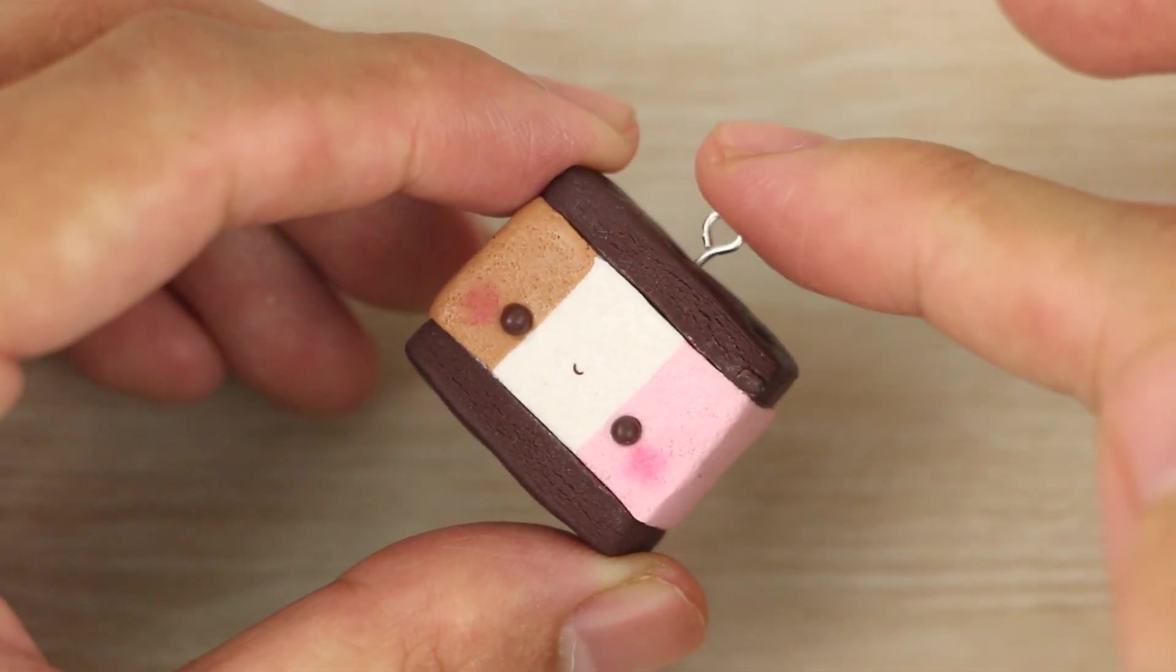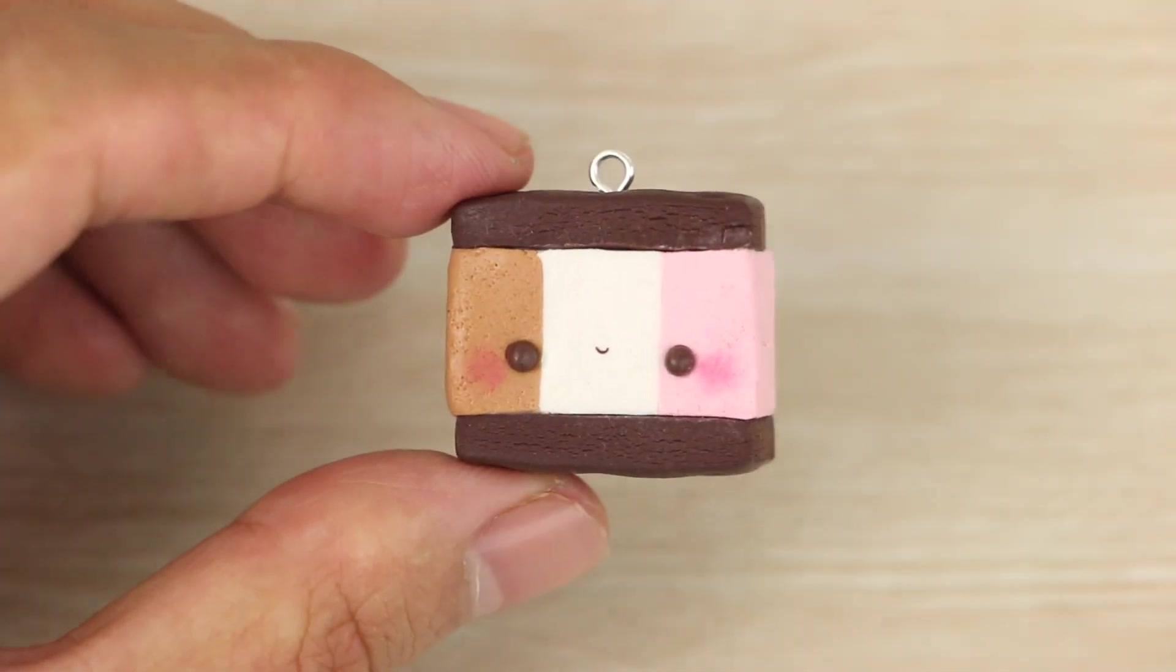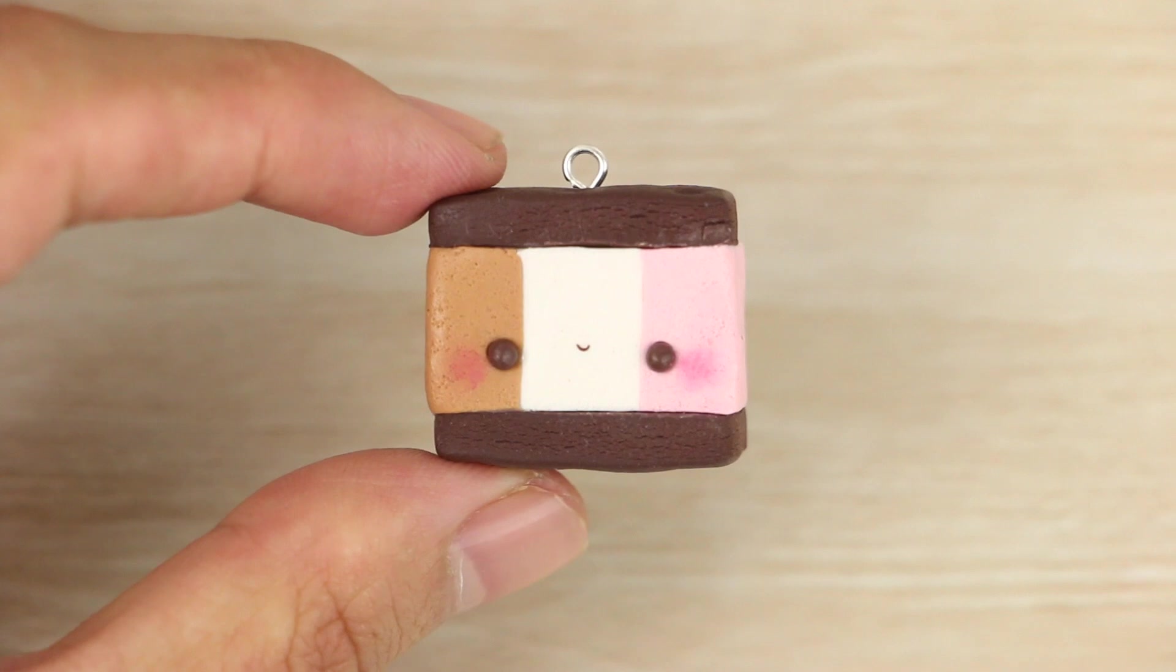And then finally to turn it into a charm, I'm inserting the eye pin. And I'm going to set the little guy aside to make the second ice cream.